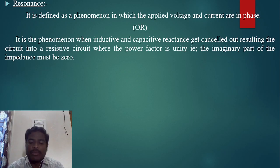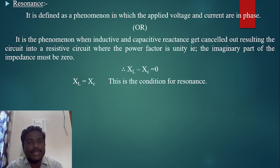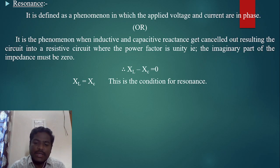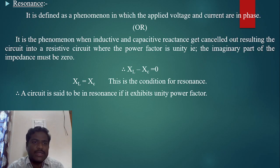The imaginary part of the impedance must be zero. So XL minus XC equals zero, which gives XL equals XC, where XL is inductive reactance and XC is capacitive reactance. This is the condition for resonance. A circuit is said to be at resonance if it exhibits unity power factor.